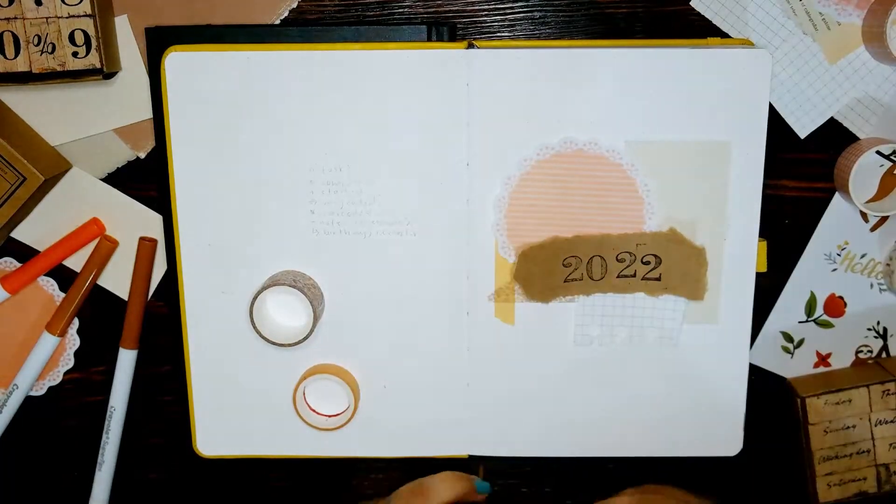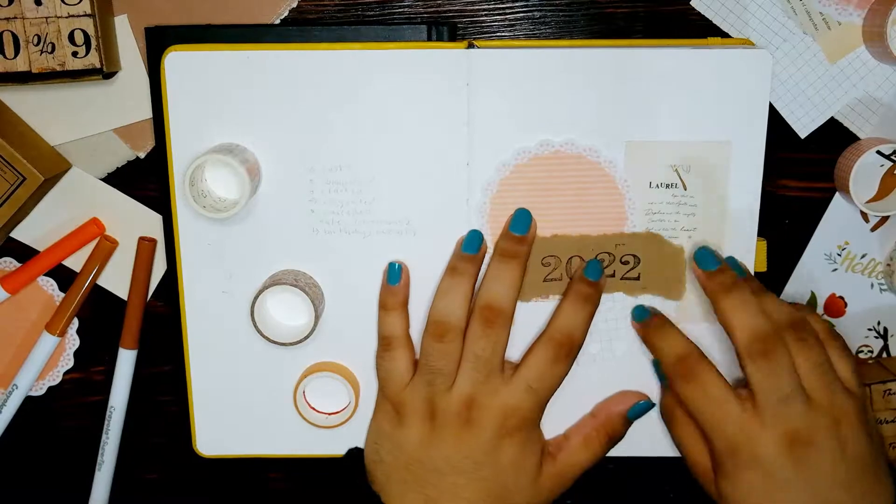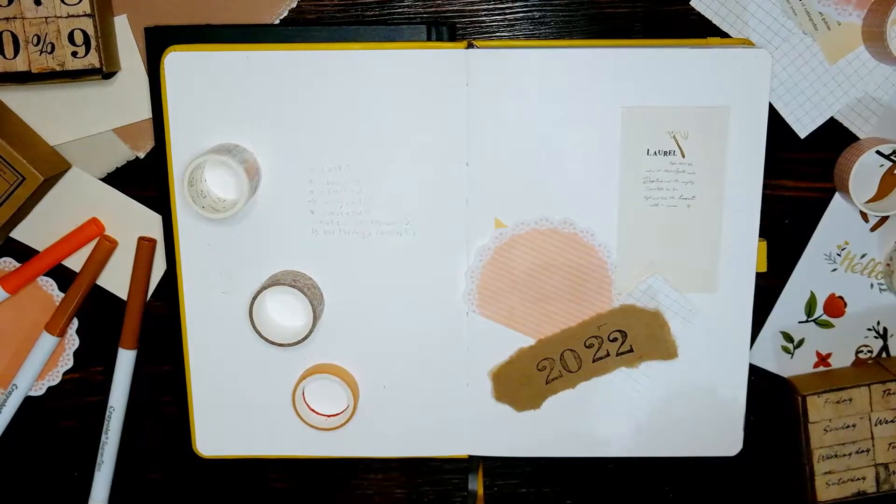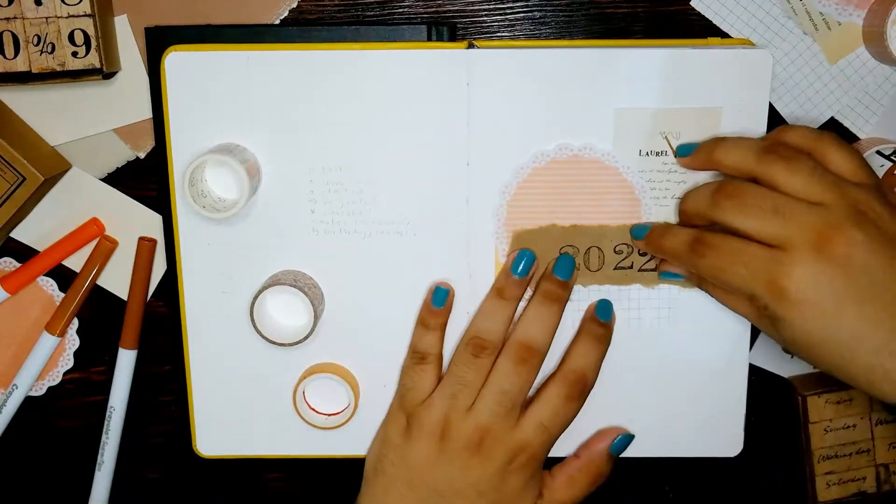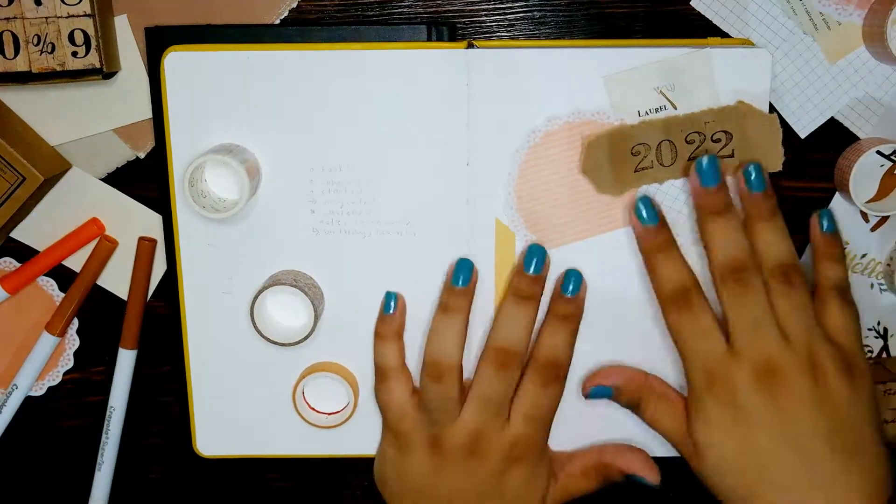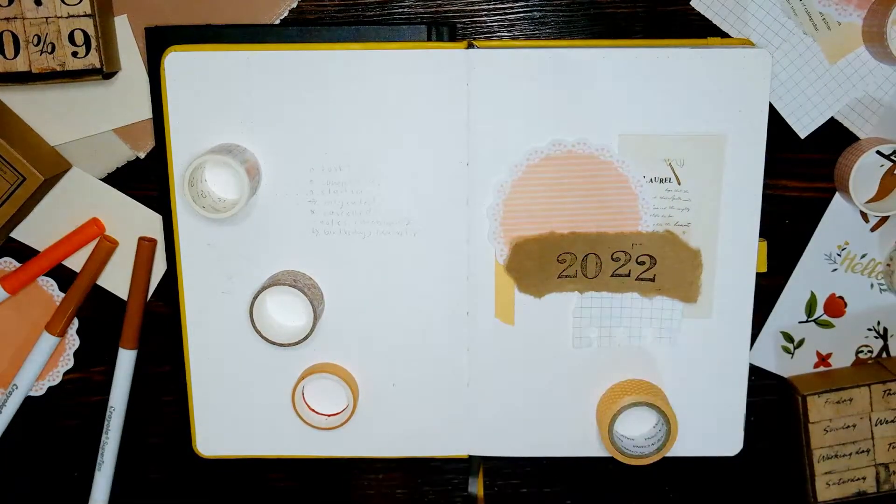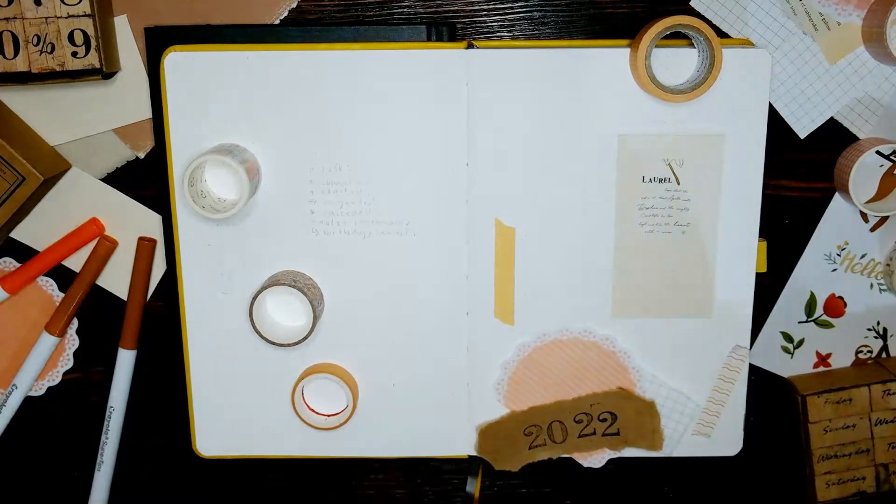As for the main spreads I'll be showing you here, I'm starting off with the cover. I know some people like starting off from the first page with the space for your personal information but I just skipped directly to this setup. Lately I've been really into the scrapbooking style of creative bullet journaling and this time I let myself loose with this one.